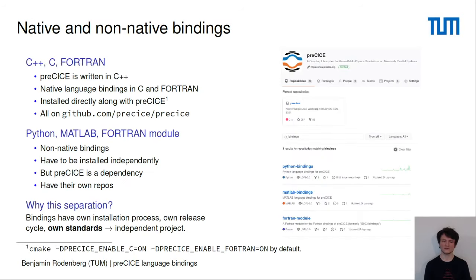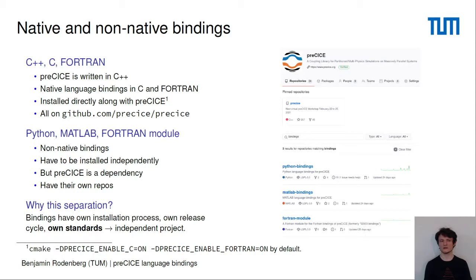To give you some orientation, I want to explain what native and non-native language bindings are. In Precise we have bindings in C++, C, and Fortran — we call these the native language bindings. Precise is written in C++, so coupling a C++ based code is no problem at all. We also have native language bindings in C and Fortran, meaning these languages are directly installed along with Precise when you configure CMake with the corresponding variables.